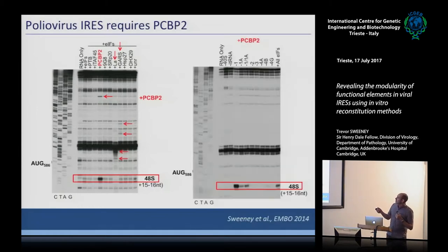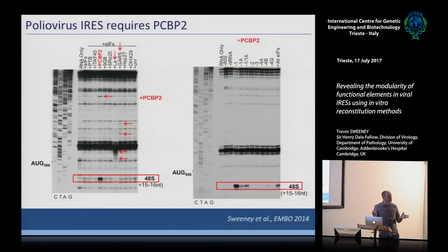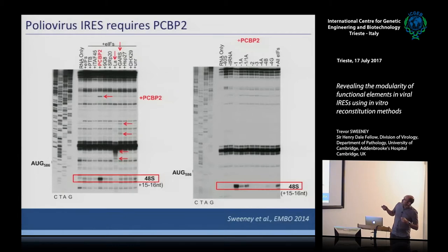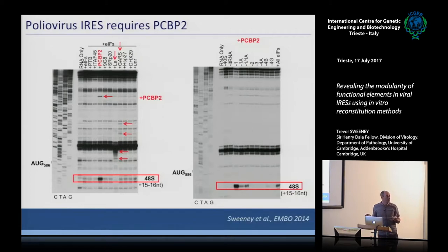In the presence of PCBP, we omitted the other translation factors one by one to see what's actually needed. EIF2, EIF3, EIF4A, EIF4B, and EIF4G are all required — without any of them, we don't get 48S complex assembly. Interestingly, when we omit EIF1, we actually see a stimulation of 48S complex assembly on this ATG.